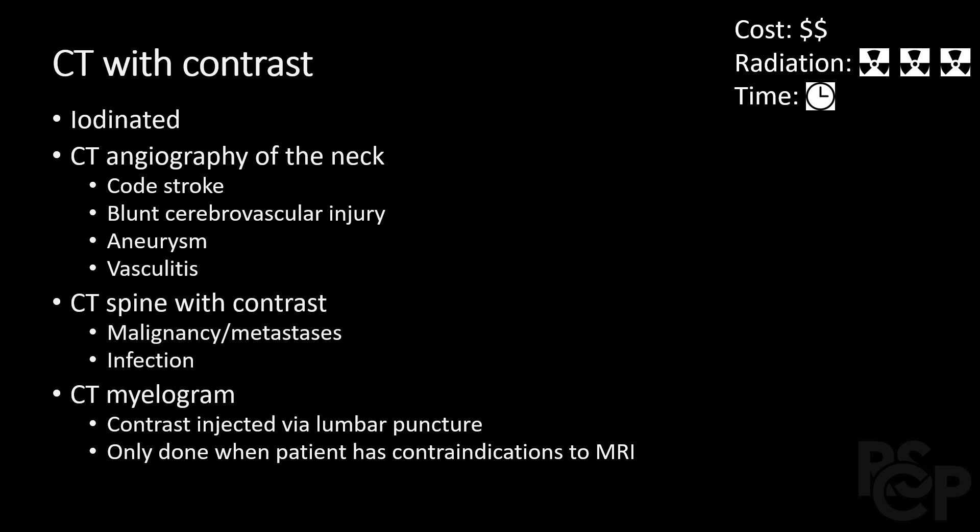There are some instances in which a CT scan requires contrast. CT contrast is iodinated, so make sure your patient is not allergic. CT angiography, or CTA, is indicated in stroke patients and trauma patients, among others. A CT spine study with contrast is typically reserved for patients with suspected malignancy or infection. A CT myelogram is when contrast is directly injected into the spinal canal and a CT is quickly performed — this is often reserved for patients with contraindications to MRI.